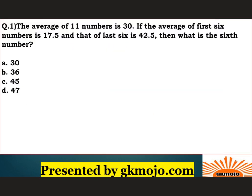Let us have a look at the first question. The average of 11 numbers is 30. If the average of the first 6 numbers is 17.5 and that of the last 6 numbers is 42.5, then what is the 6th number? So they have given you the average of 11 numbers. The sum of total 11 numbers will be 30 into 11, which is 330.